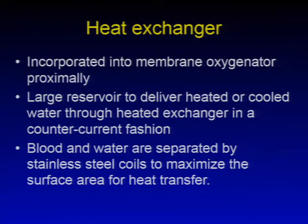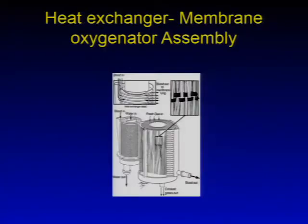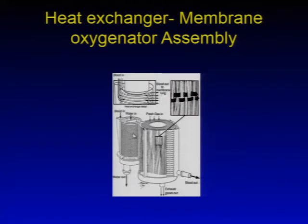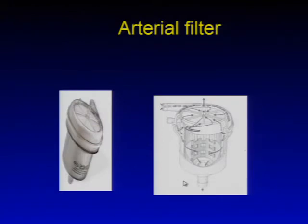Heat exchangers are incorporated into the membrane oxygenator proximally. There is a large reservoir to deliver heated or cold water through the heat exchanger in a counter-current fashion, with blood and water separated by stainless steel coils to maximize surface area for heat transfer. Blood enters the heat exchanger, is cooled or warmed depending on temperature, then enters the membrane oxygenator, gets oxygenated, and exits into the arterial line.